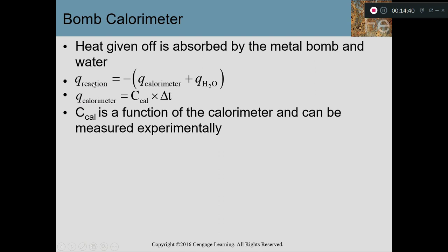Here's where the math differs: for the coffee cup, Q of the reaction equals just the negative of the Q of the water. For the bomb calorimeter, you have two parts — the Q of the water and the Q of the calorimeter. Both the water and the calorimeter will increase in temperature by the same amount, since they start at the same temperature and end at the same final temperature — so delta T for both is the same. For the calorimeter you use C·ΔT (CAT), and for the water you use MC·ΔT (MCAT). The heat capacity of the calorimeter will be given to you directly.